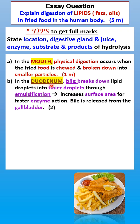Next, in the duodenum — the first part of the small intestine — bile, which is produced by the liver, breaks down lipid droplets into tiny droplets through emulsification — one mark. This increases the surface area for faster enzyme action — one more mark. Bile is released from the gallbladder.